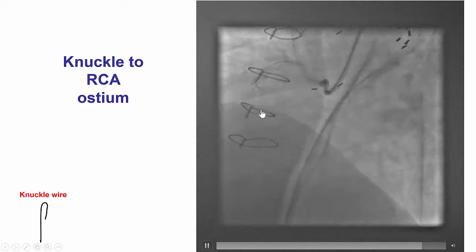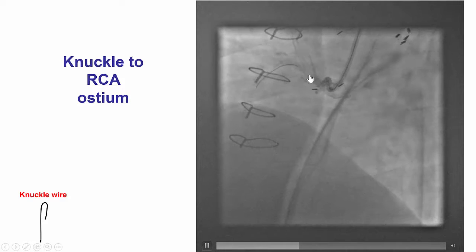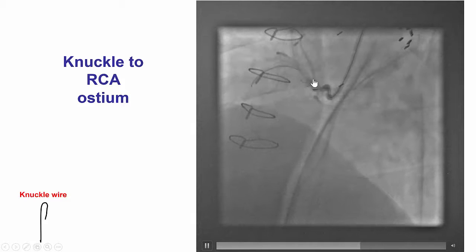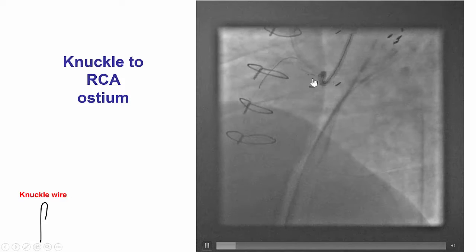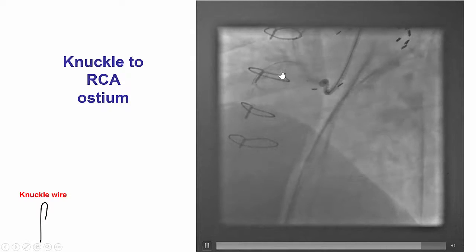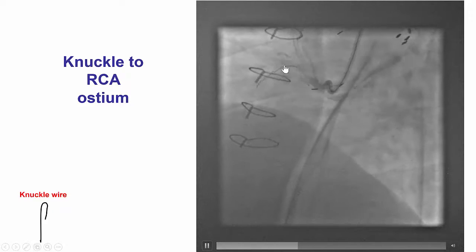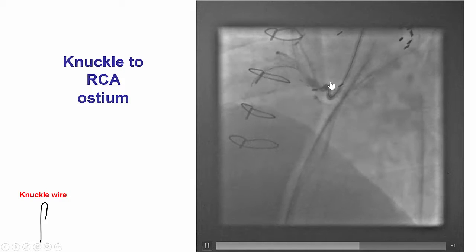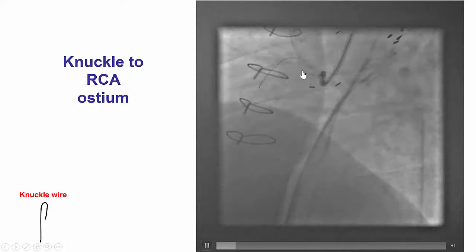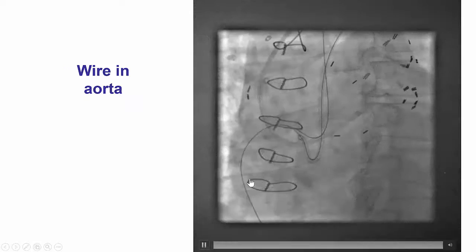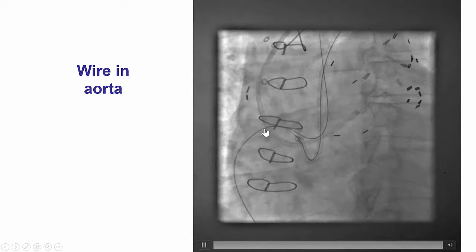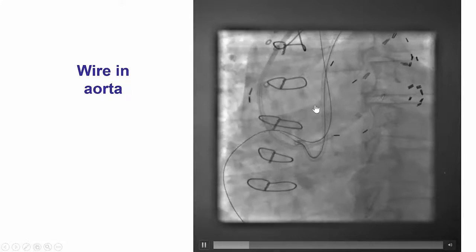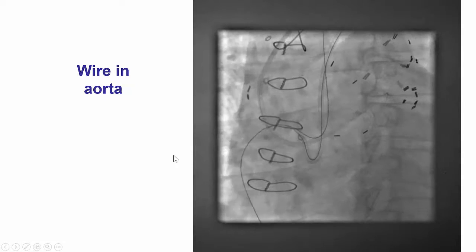We were able to advance the knuckle all the way to the ostium, which helped resolve the ambiguity, demonstrating a very upward course of the proximal right coronary artery. This also modified the proximal cap, and we were then able to advance an antegrade wire and perform reverse CART, which resulted in the retrograde wire being advanced into the aorta.